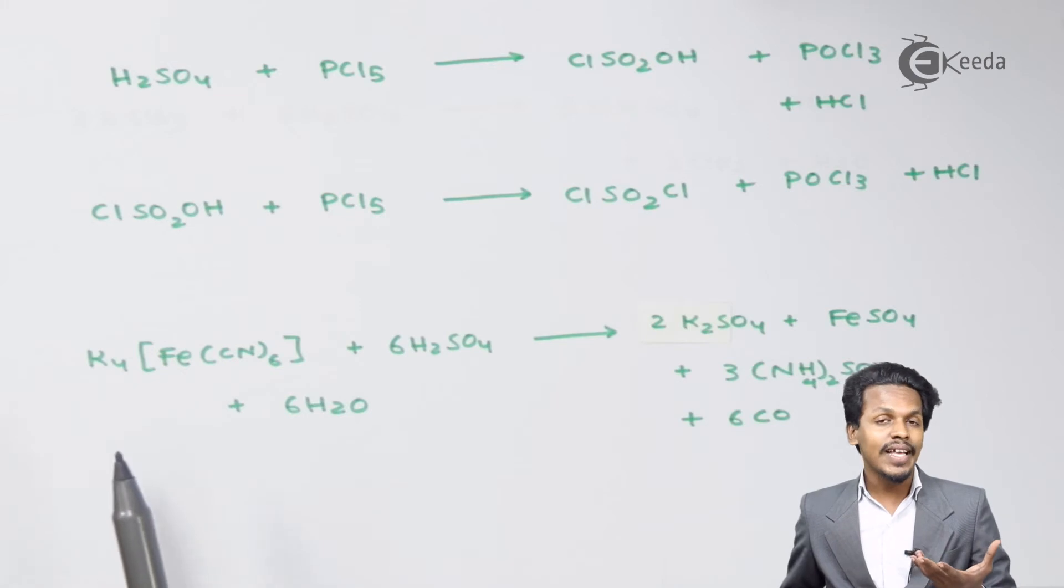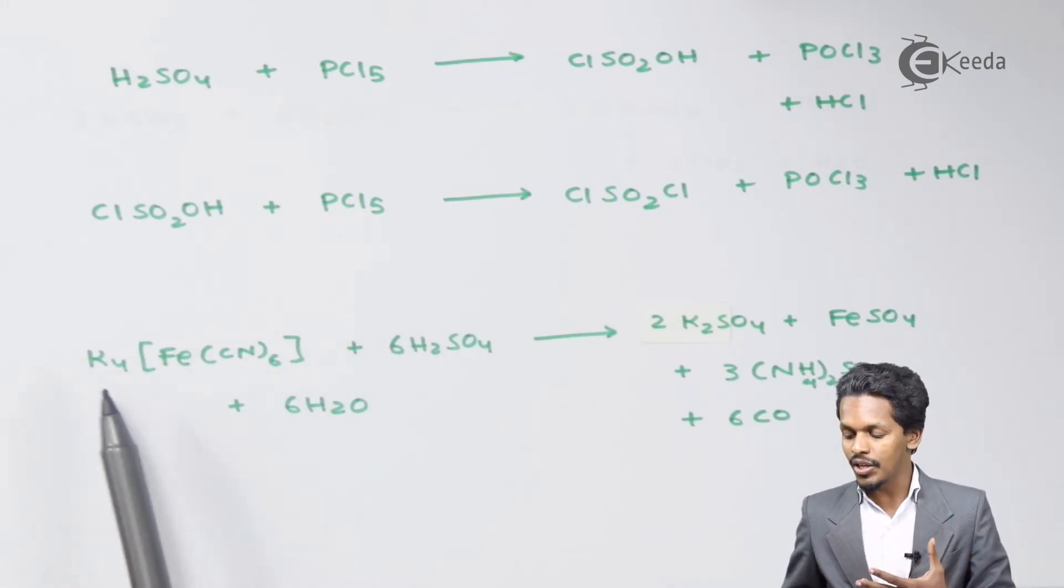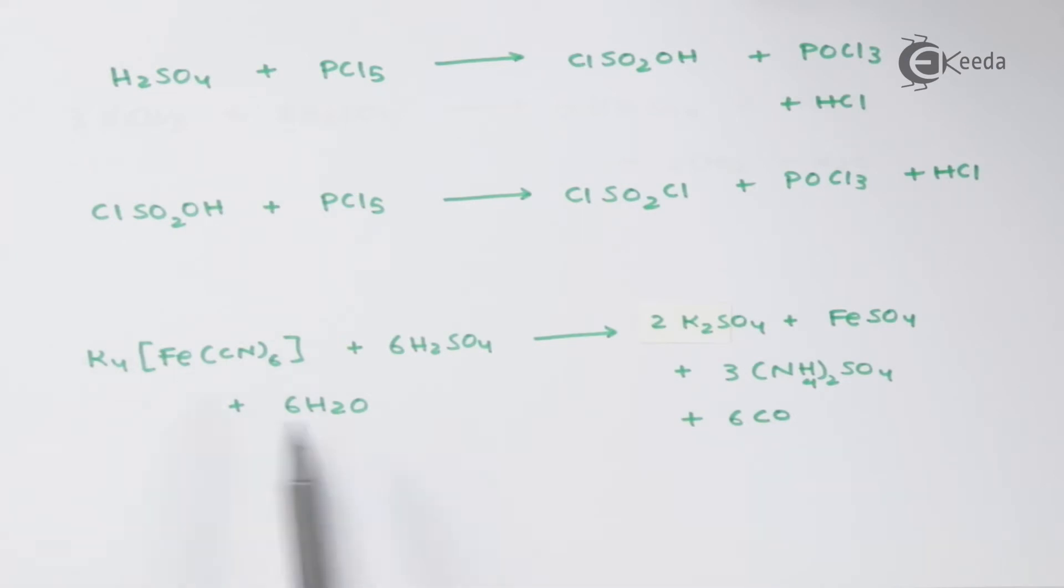Now talking about the next reaction: H2SO4 is very much reactive to this complex, potassium hexacyanoferrate. In that case, 6 moles of H2SO4 is used along with 6 moles of H2O to produce 2 moles of K2SO4, that is potassium sulfate, along with FeSO4, ferrous sulfate, along with 3 moles of ammonium sulfate and 6 moles of carbon monoxide.